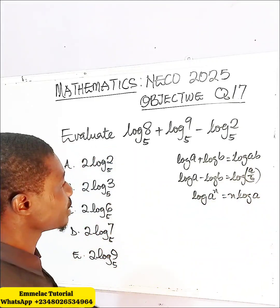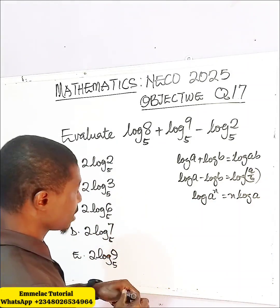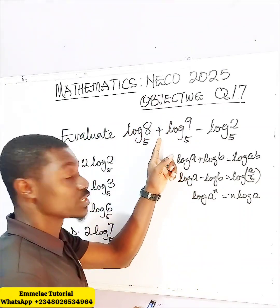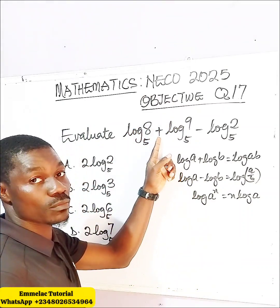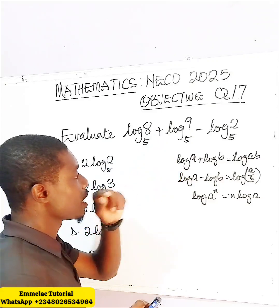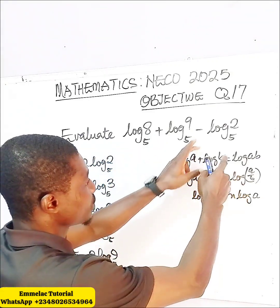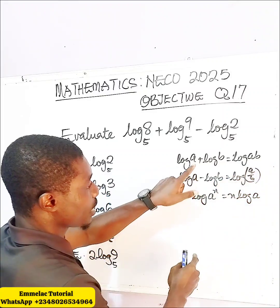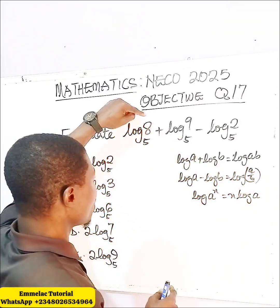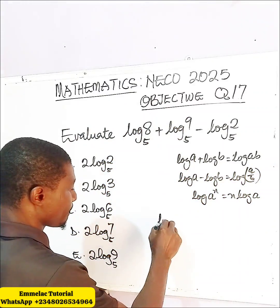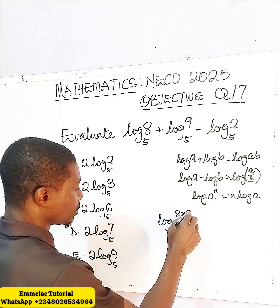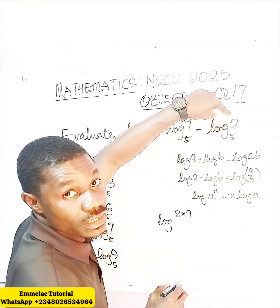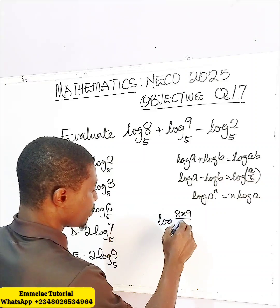So let's apply this. Since log 8 and log 9 are connected with the addition sign, and the whole of this is minus log 2, we apply the product rule: log A plus log B gives us log A times B. So here we have log of 8 times 9, and then the result is divided by 2, all in base 5.